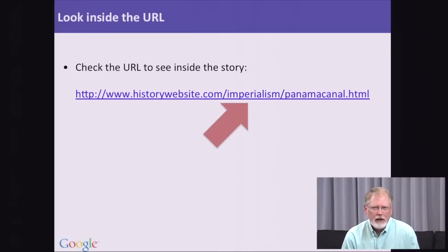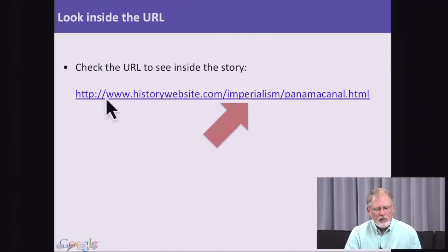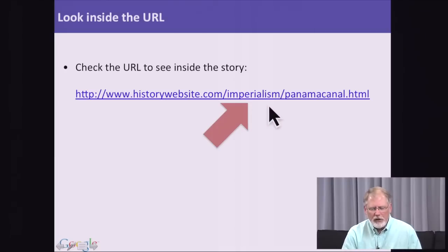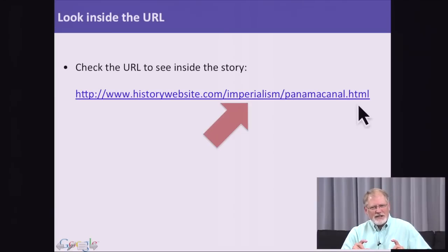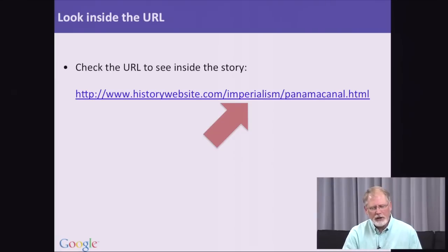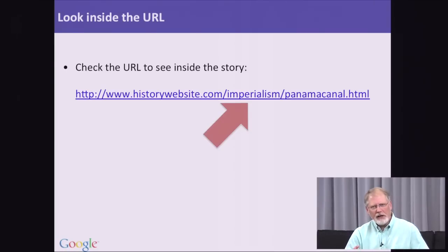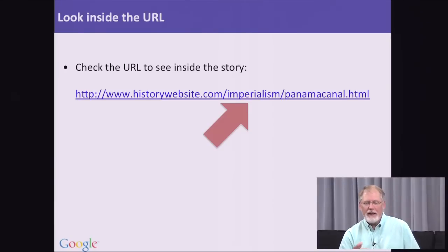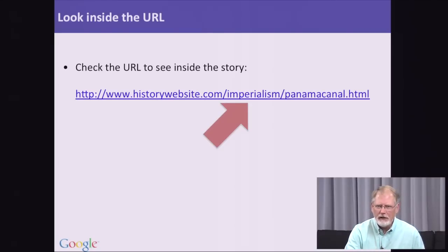One method to increase credibility is to look inside the URL. We've already talked about how URLs are composed of several pieces. For example, a site like historywebsite.com — this is a made-up example — might have a directory called "imperialism" pointing to a document called "Panama Canal." You can see that it's wearing its ideas on its sleeve. That document about the Panama Canal, which may be innocently labeled "The History of Panama," is actually coming from a particular perspective signaled by the word "imperialism" in the URL. Pay attention to those things — they will often give you a quick first signal about what's going on.